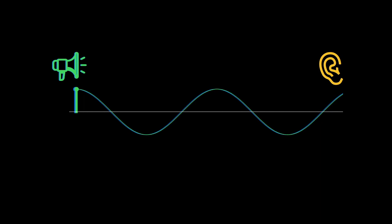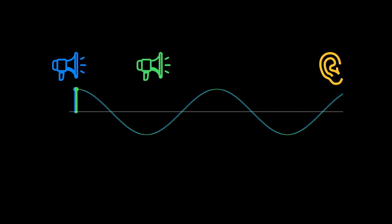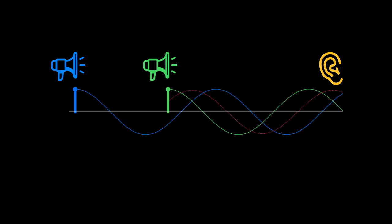Here we have our model: a listener on the right and two sources — a blue source and a green source, represented by the megaphones. We're going to start by shifting one source relative to the other, so the green source is traveling a shorter distance to reach the listener than the blue source. The path length difference is the distance from the green source to the blue source. In this case, the path length difference is just an arbitrary amount, and the resultant wave is a third sine wave of the same frequency but not at a maximum or minimum value.